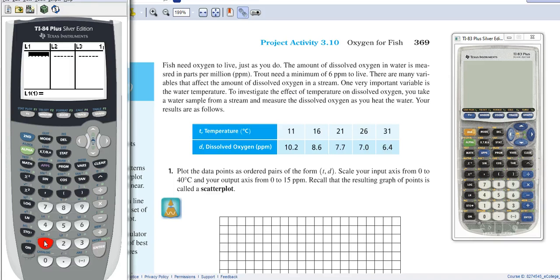So now I'm going to just type in my information. So 11, 16, 21, 26, 31, and then I arrow over, 10.2, 8.6, 7.7, 7, and 6.4.